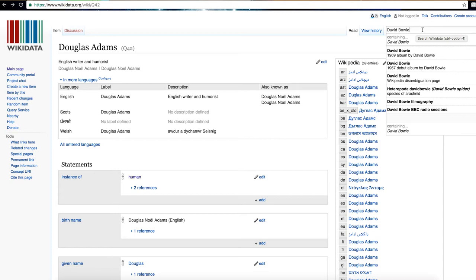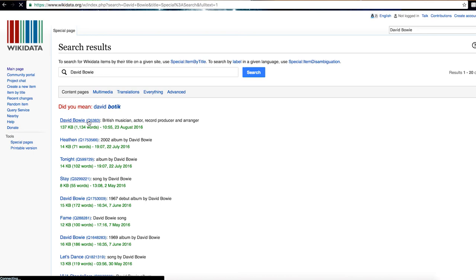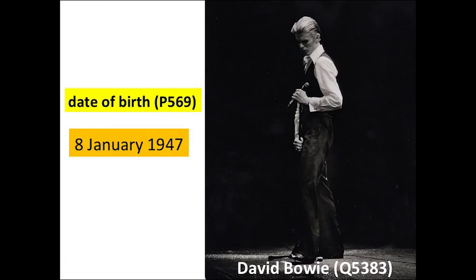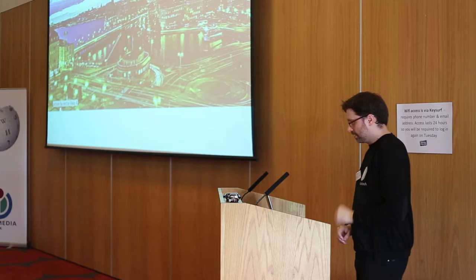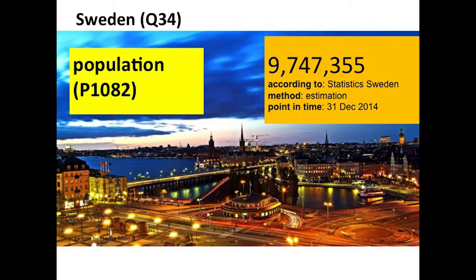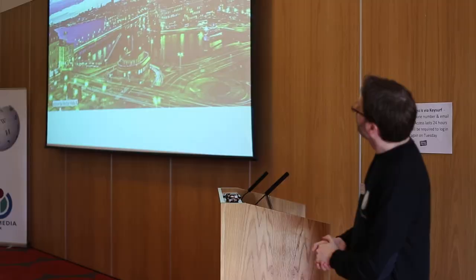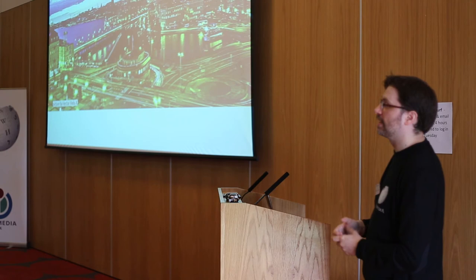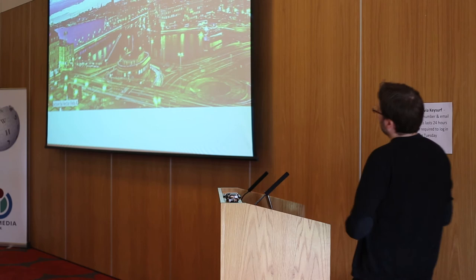There is also an item for David Bowie — his unique identifier is Q5383 — with a statement for date of birth: property P569, value 8th of January 1947. Sweden is Q34, with property 'population' P1082, and the value 9,747,355. We also have references and qualifiers: additional information about where we got that data and at what point in time it was provided. Wikidata can hold all of that information, so if there are any changes — like a government change — you have one central point of reference to update, and it feeds that information to any number of different sources.